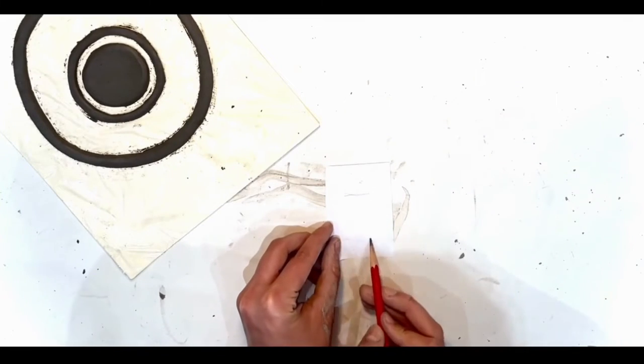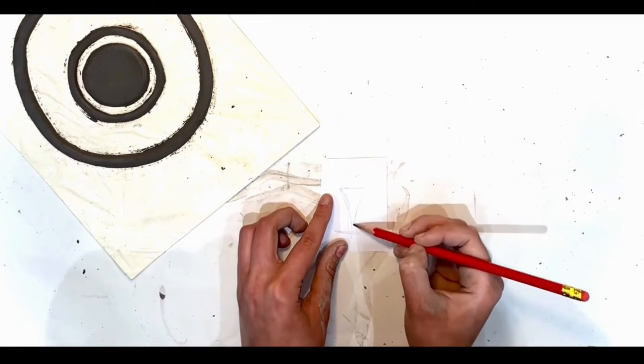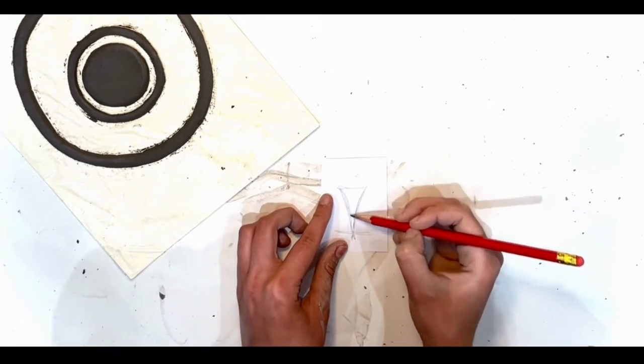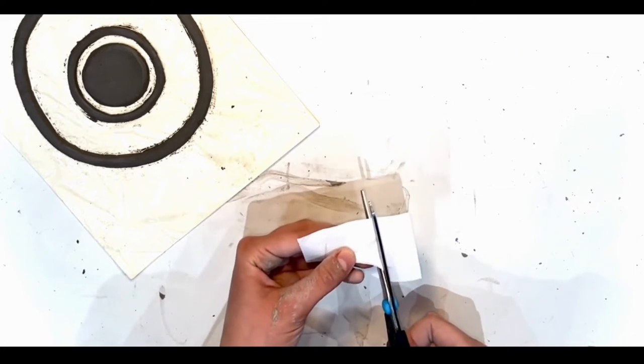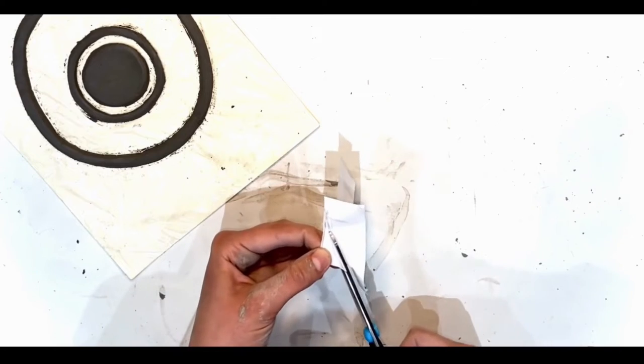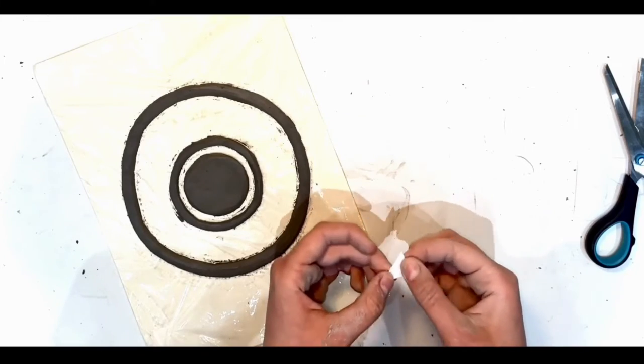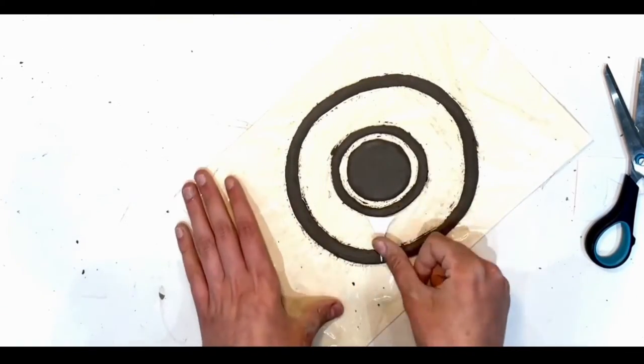Now take a piece of paper to make a stencil and trace out a curved triangle that will fit between the inner and outer circle. This shape will become the flames that will create the sun shape. Line it up and make sure it fits.